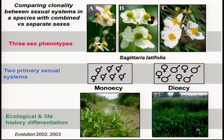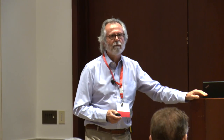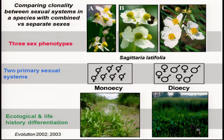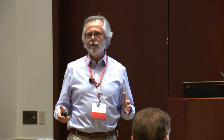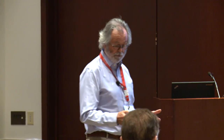Now I want to talk about monoecious and dioecious populations of Sagittaria. This is work by Marcel Dolkin, who will be talking tomorrow. Marcel was a graduate student in my lab and did a very elegant study exploiting the fact that Sagittaria latifolia — quite common in eastern North America and a little bit in California — actually has both combined versus separate sexes. Sagittaria latifolia has monoecious populations with hermaphrodites having separate male and female flowers, and some other populations have male individuals and female individuals that are dioecious. Marcel demonstrated these two sexual systems are associated with quite different life histories and are ecologically segregated.